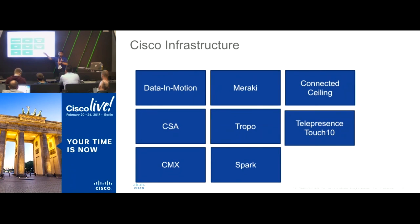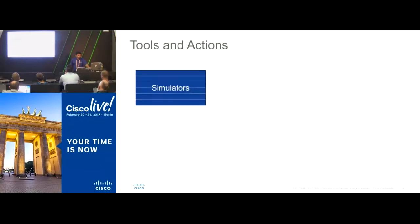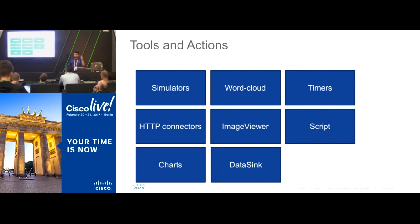Spark — I'm sure most of you are aware of Cisco Spark. Connected Ceiling is another application where we've integrated Philips lights and new LEDs, so you can turn on and off different lights in a room. We also have telepresence touch panels where you can turn on lights or bring the blinds down. In the tools section, we have simulators and HTTP connectors to build your application.